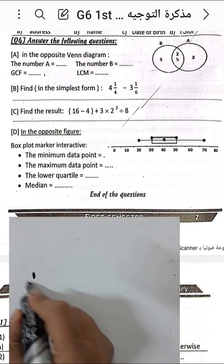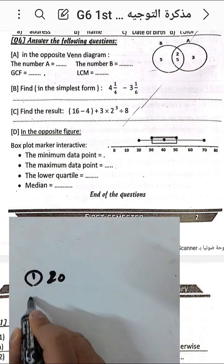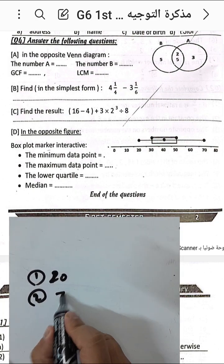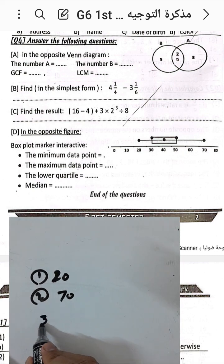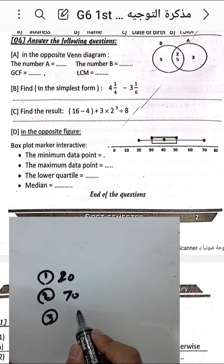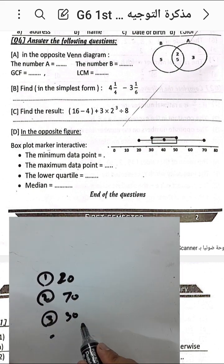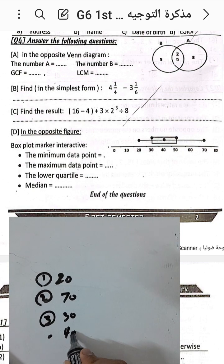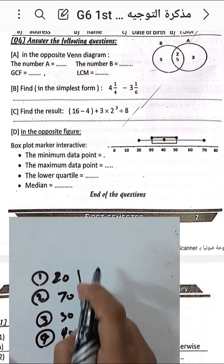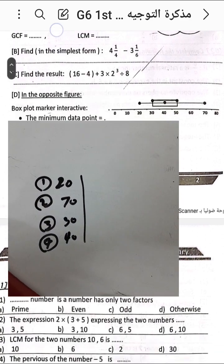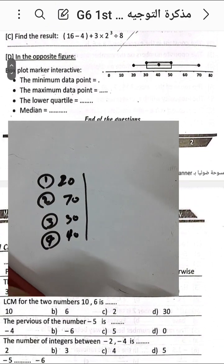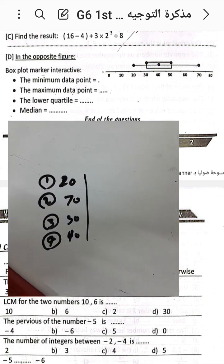Last question: from the box plot, find the minimum, maximum, lower quartile, upper quartile, and median. The minimum is 20, the maximum is 70, the lower quartile is 30, the upper quartile is 50, and the median is 40.